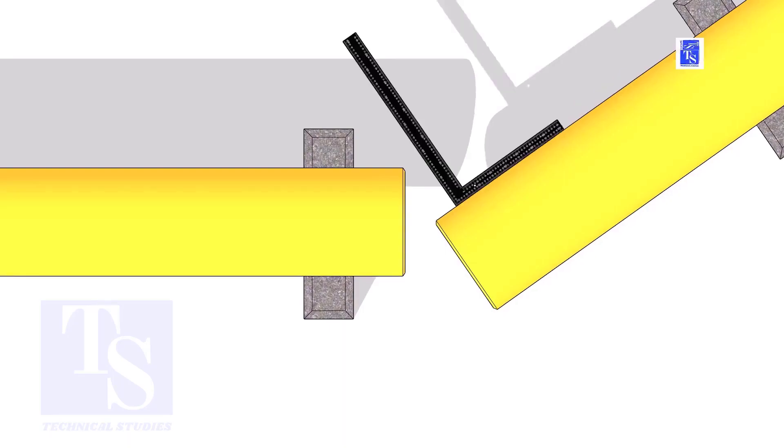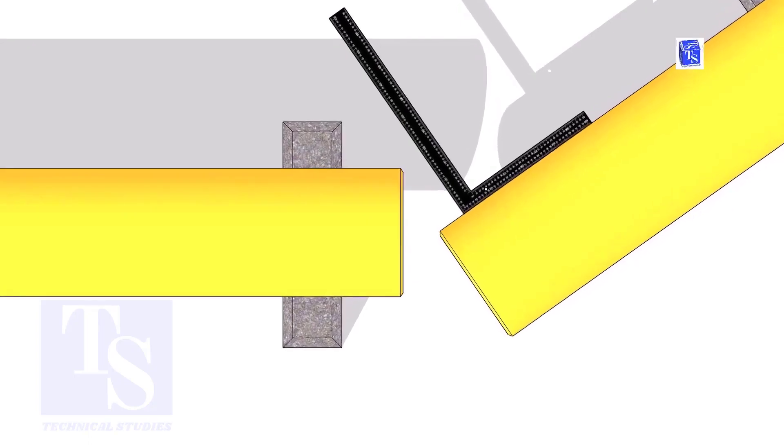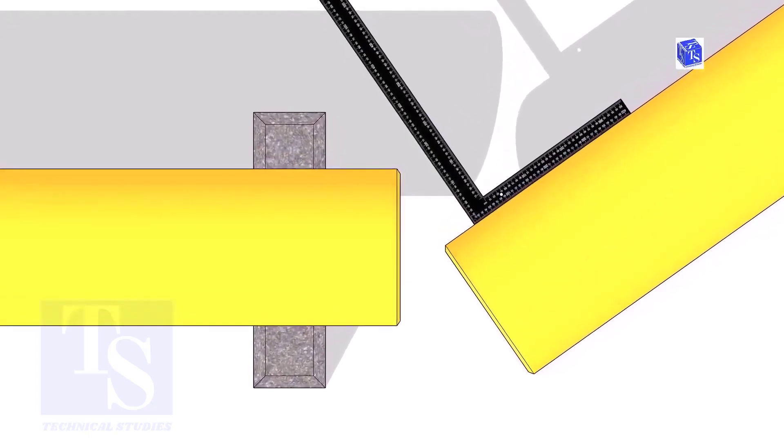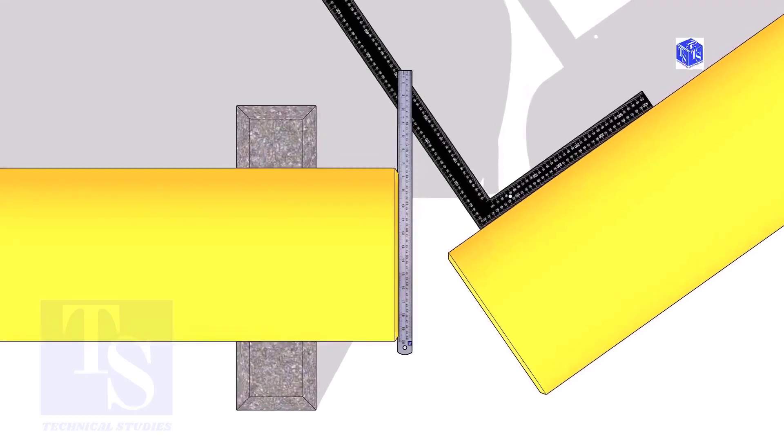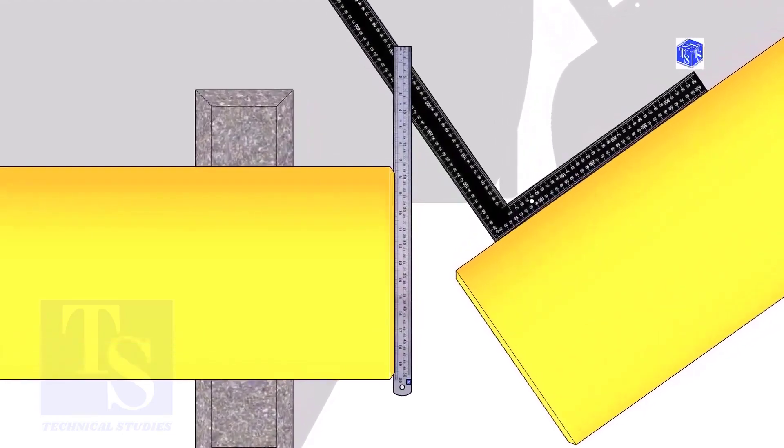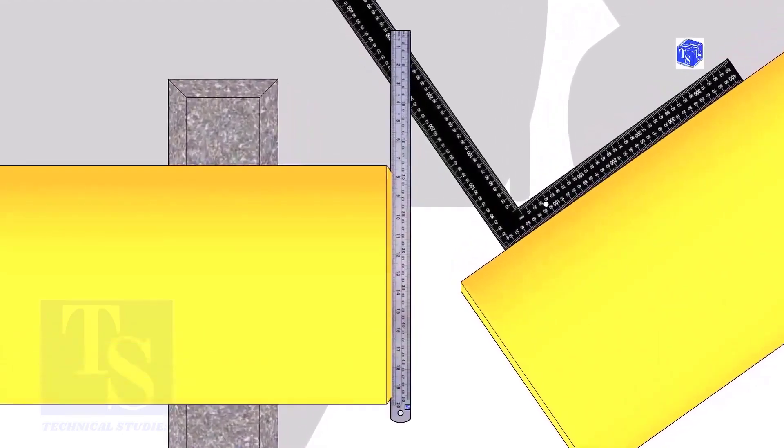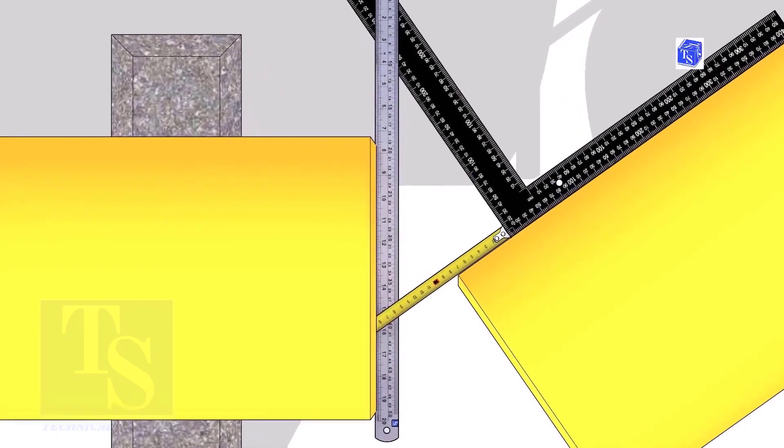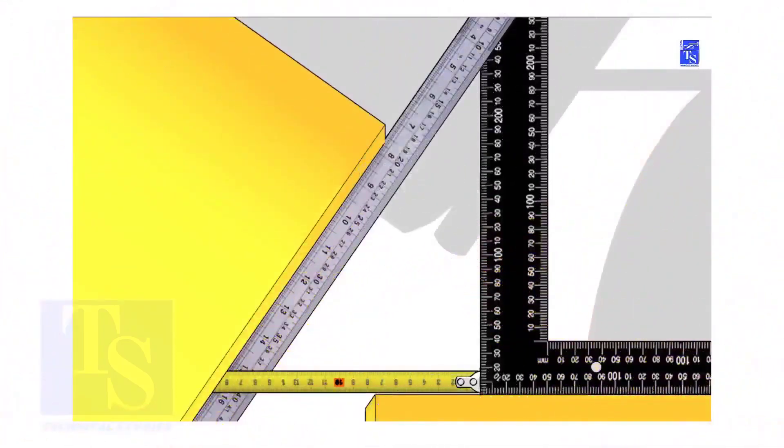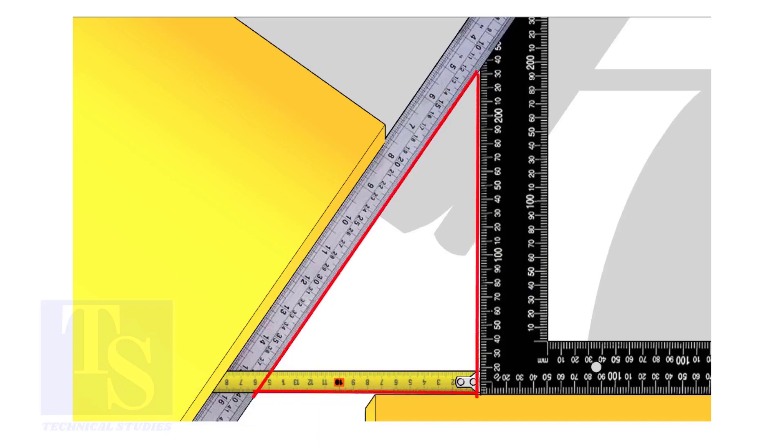Hold a right angle on the pipe as shown. Hold a scale on the other pipe as shown. Measure and note down the dimensions of the triangle.